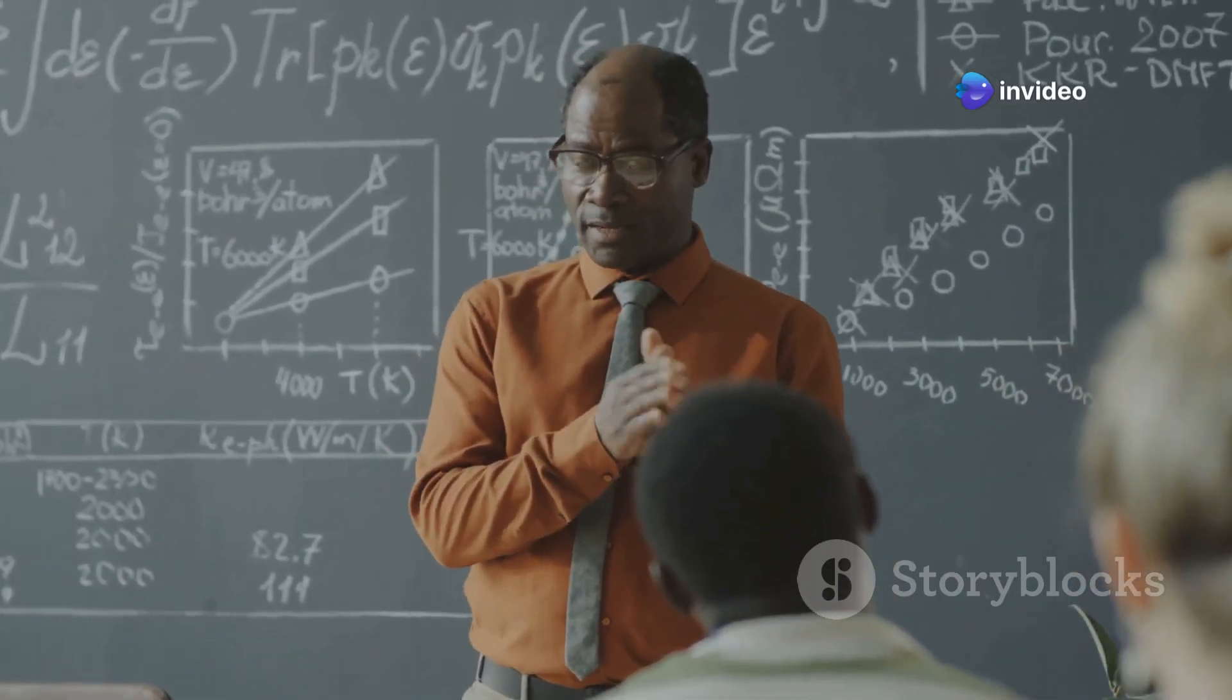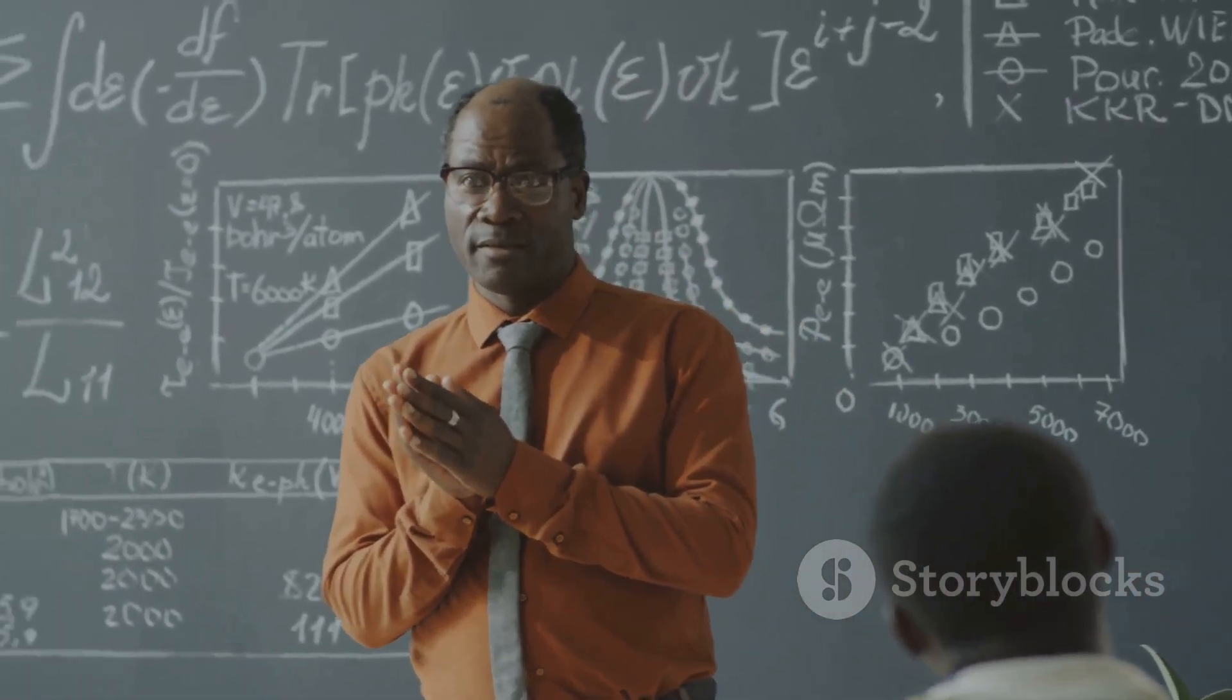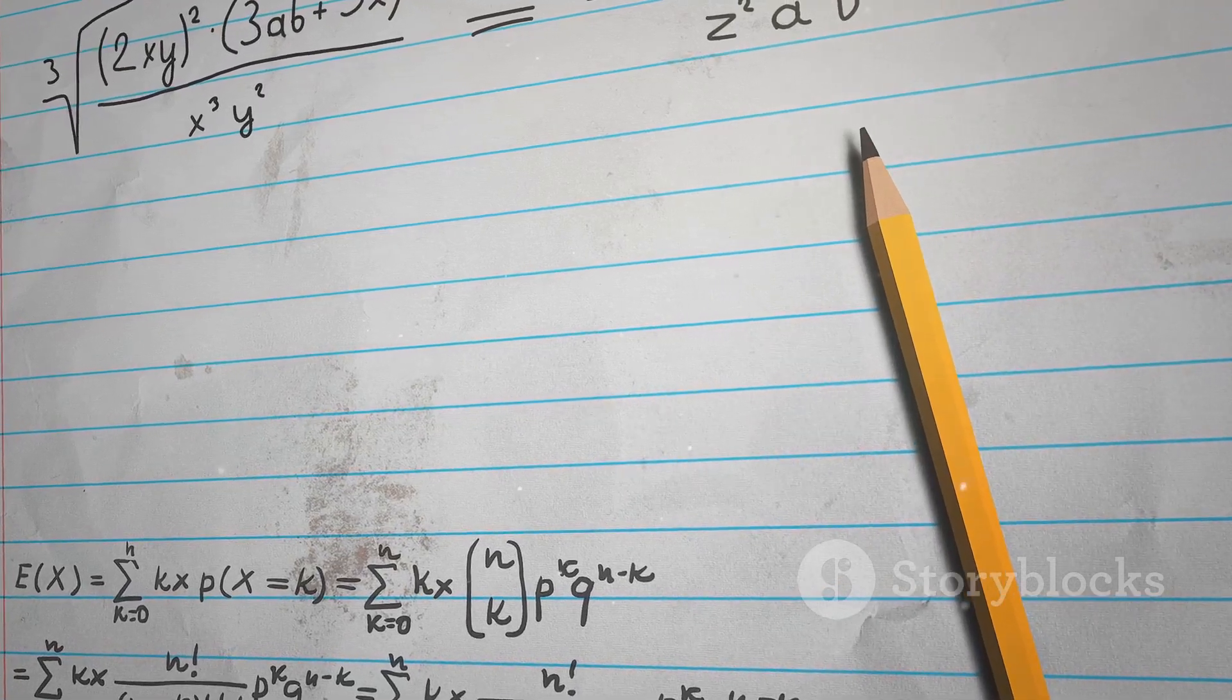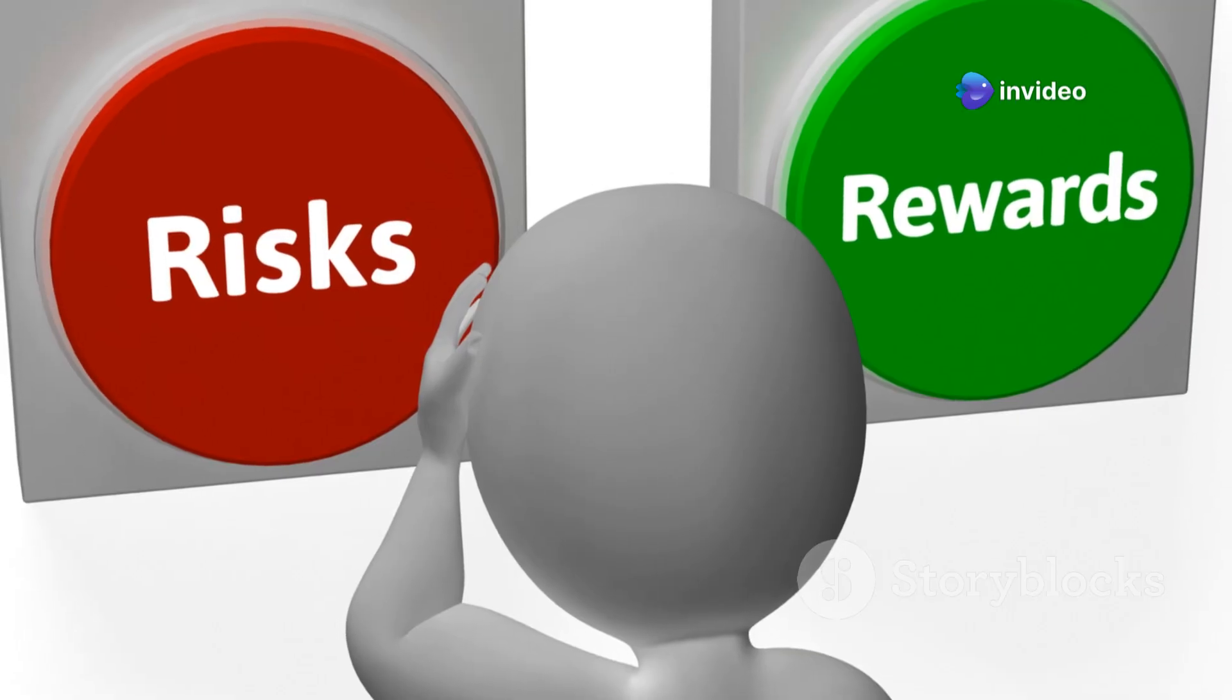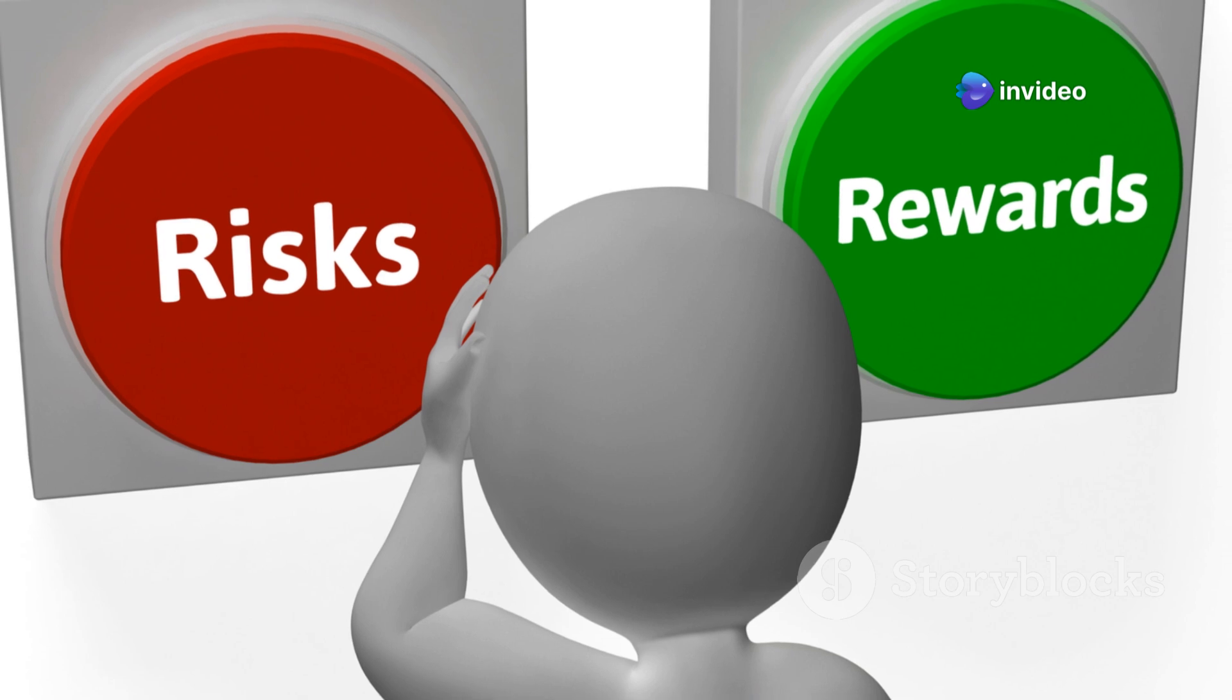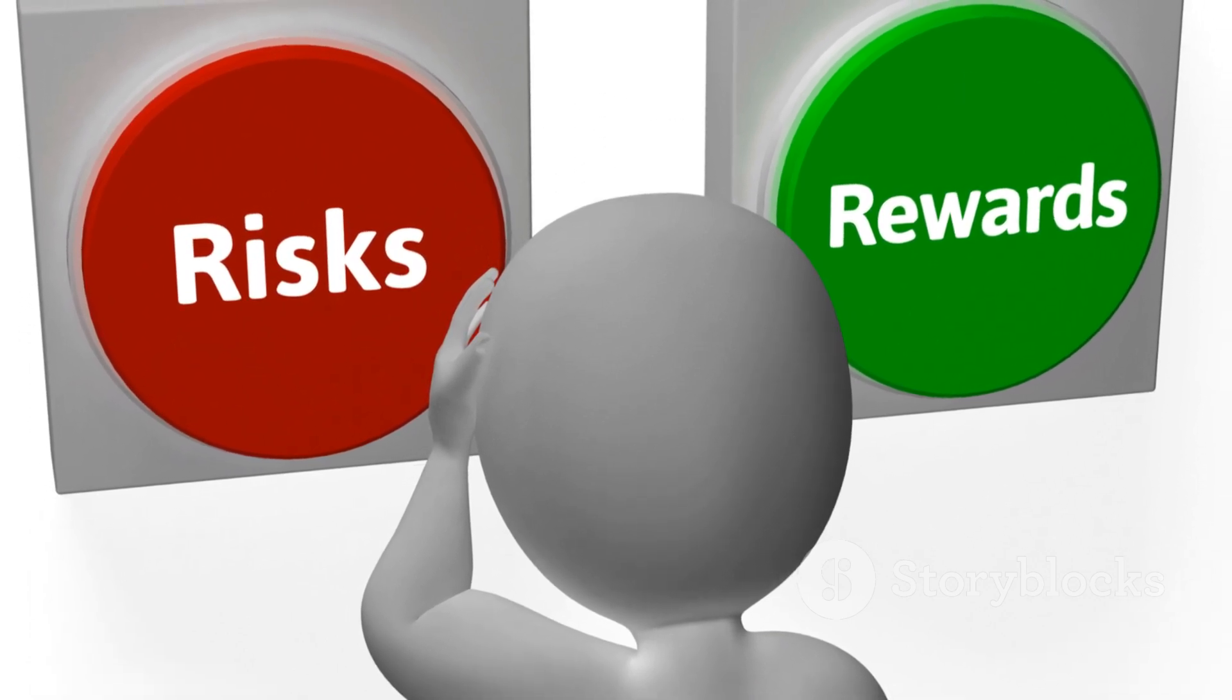The Bellman equation elegantly relates the value of a state to the values of its successor states: Vs = max_a[r(s,a) + gamma * Σ P(s'|s,a)V(s')]. This equation tells us that the value of the current state is equal to the expected immediate reward plus the discounted expected value of the next state.